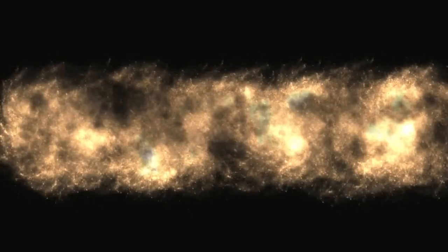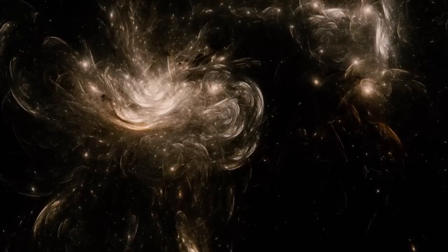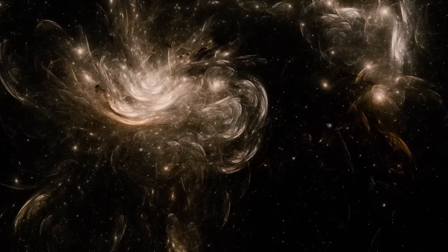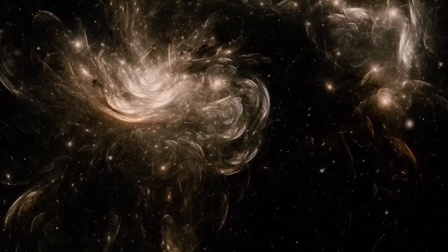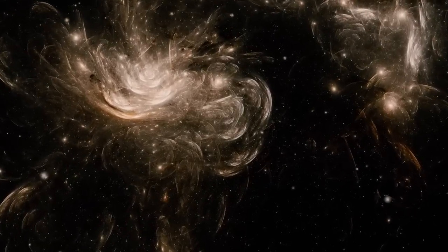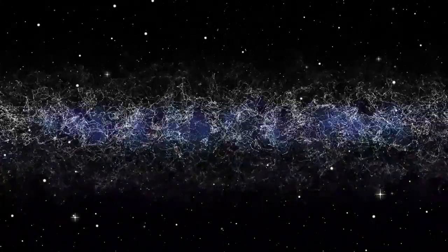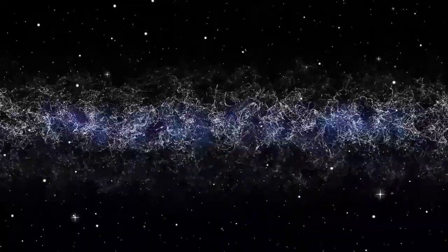To visualize this, imagine if our solar system were reduced to the size of a coin placed on a map of the United States. The entire Milky Way would then span the size of the actual continent. In that vast region, there would be around 300 billion star systems, and we are just one of them, adrift in a sea of unimaginable scale.